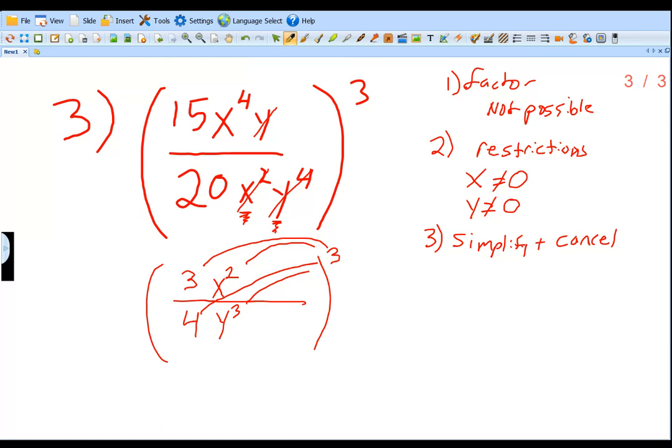So 3 is going to be raised to the third power. We're going to have X squared raised to the third power. We're going to have 4 raised to the third power. And we're going to have Y to the third power raised to the third power. So that exponent, that cube, is going to be applied to every single term in there. What do you do? You multiply. If there already is an exponent, multiply those exponents together to get the new exponent.